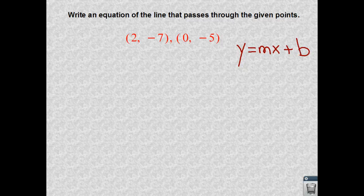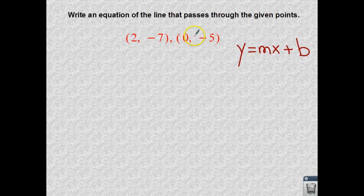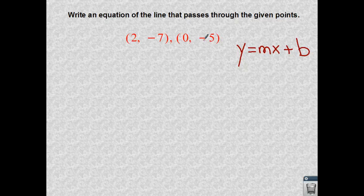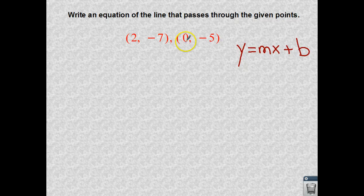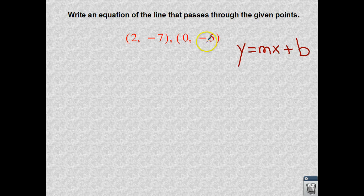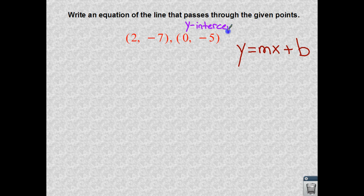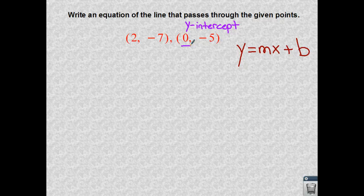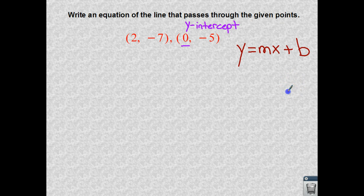Okay, so the thing that jumps out at me is this ordered pair right here. Since I have a 0, negative 5, I'm thinking all the way back to the lesson that we did on finding the intercepts of the line. And I know that if I have an x value that is 0 and a y value that is negative 5, I have my y-intercept right here. It's just staring at me in the face. Because I know a y-intercept is going to occur when my x value is at a 0. So I can quickly fill in a portion of my equation. So my b, my y-intercept is negative 5.